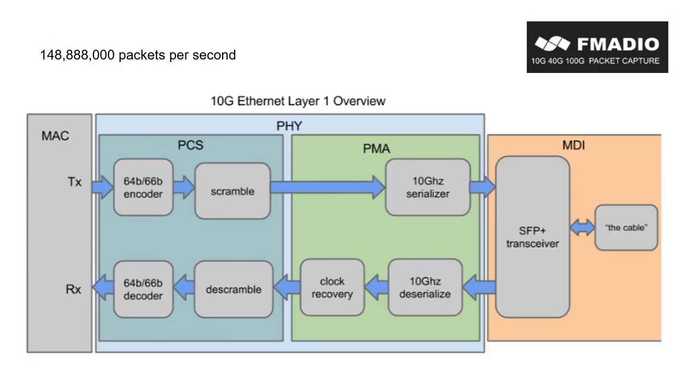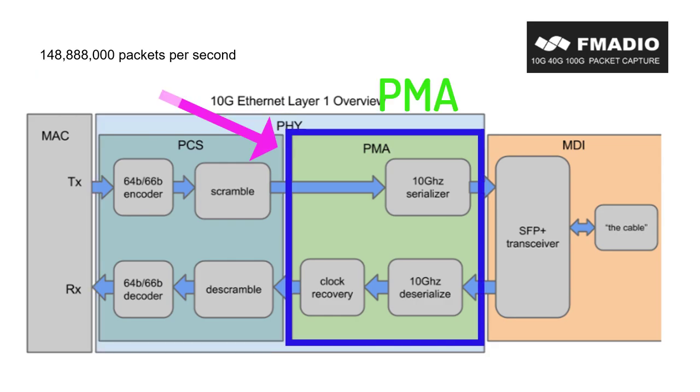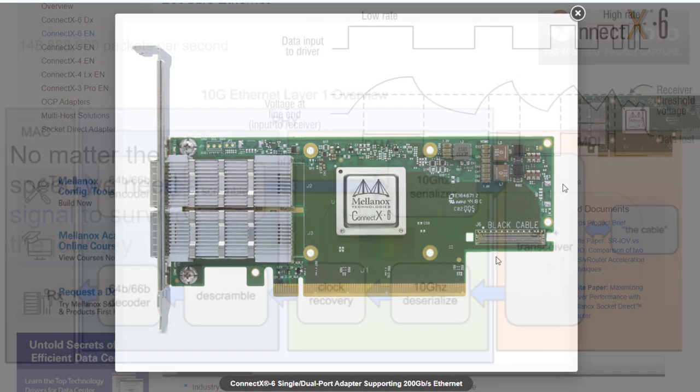Here's the latest 10 gigabit ethernet and it's got a block diagram much like we just saw. This is a new Mellanox data center grade network card that runs at over 200 gigabits per second per port. This is incredible signal processing technology.